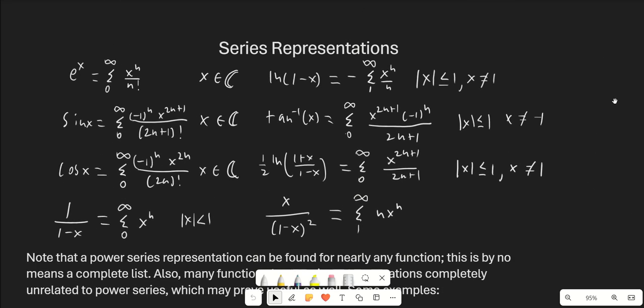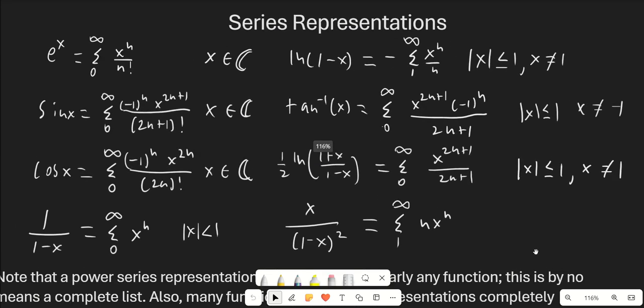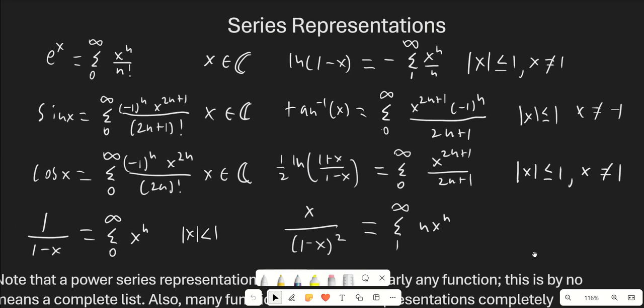Let's talk about series representations to remember. Here are some really common power series. One important thing to note is the radius of convergence and the interval of convergence of a power series, because if we apply these in situations where they don't converge, that's not allowed and we'll just end up messing something up. For e to the x, sine x, and cosine x here are the power series, and they converge everywhere in the complex plane, so you don't really have to worry about that. Most power series have a radius of convergence of 1.